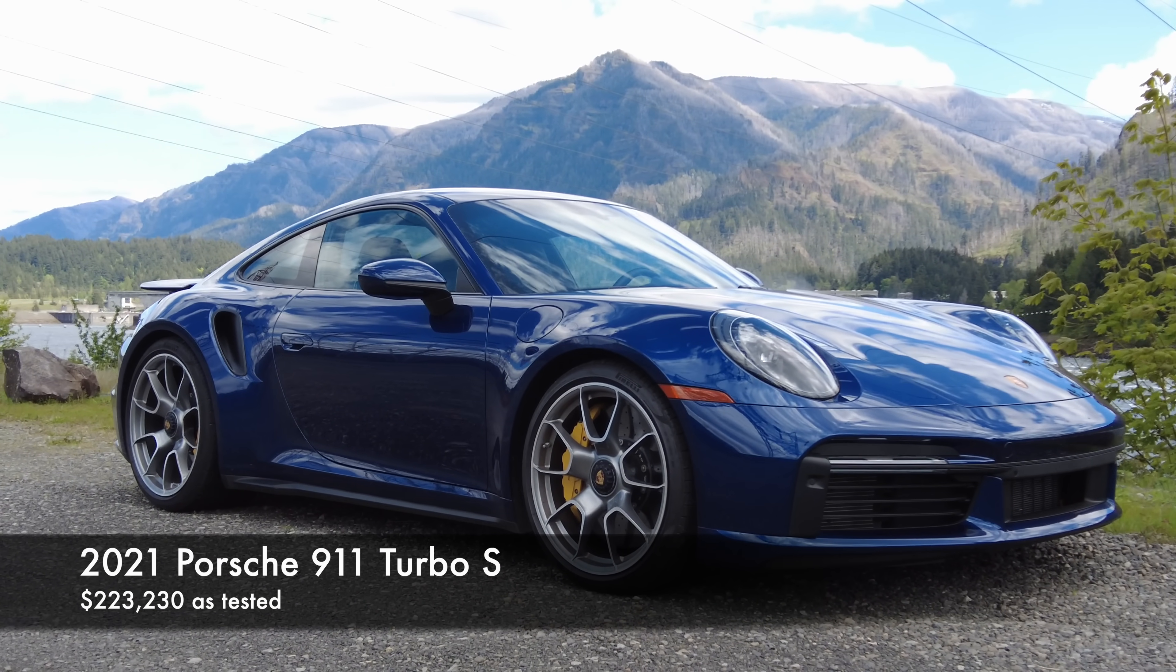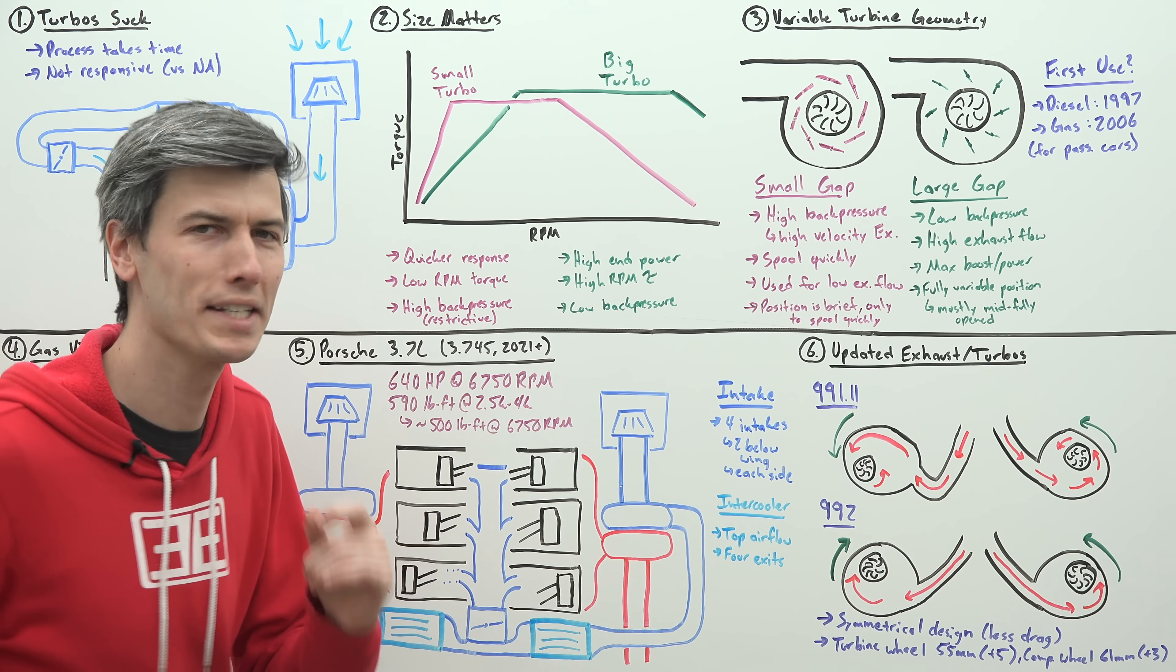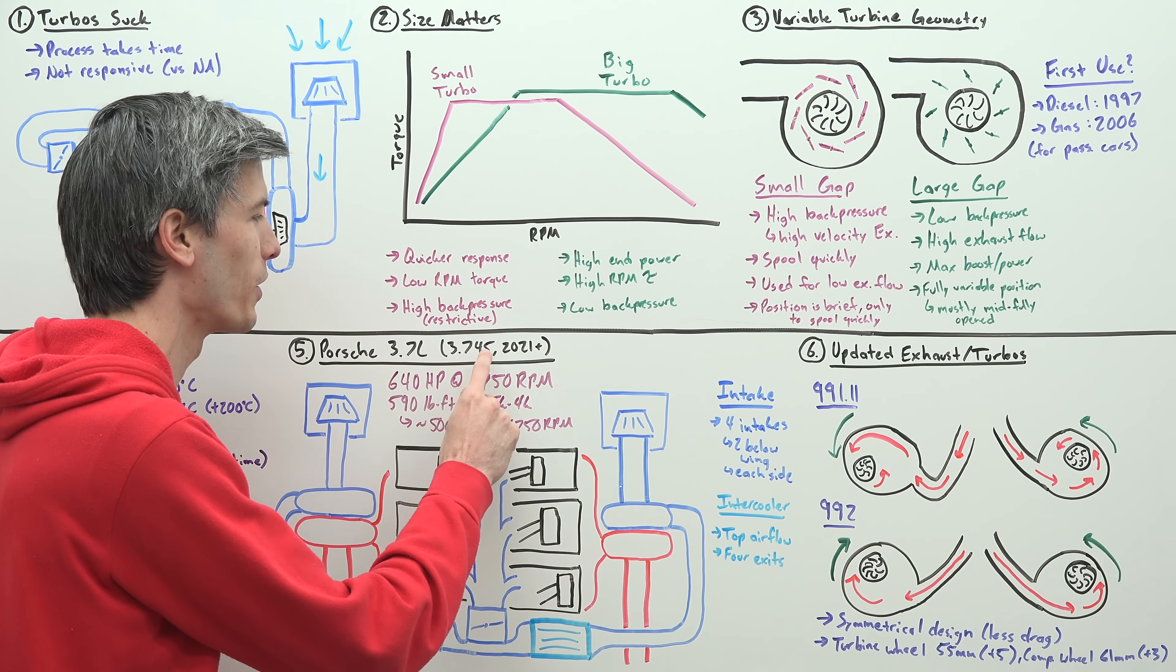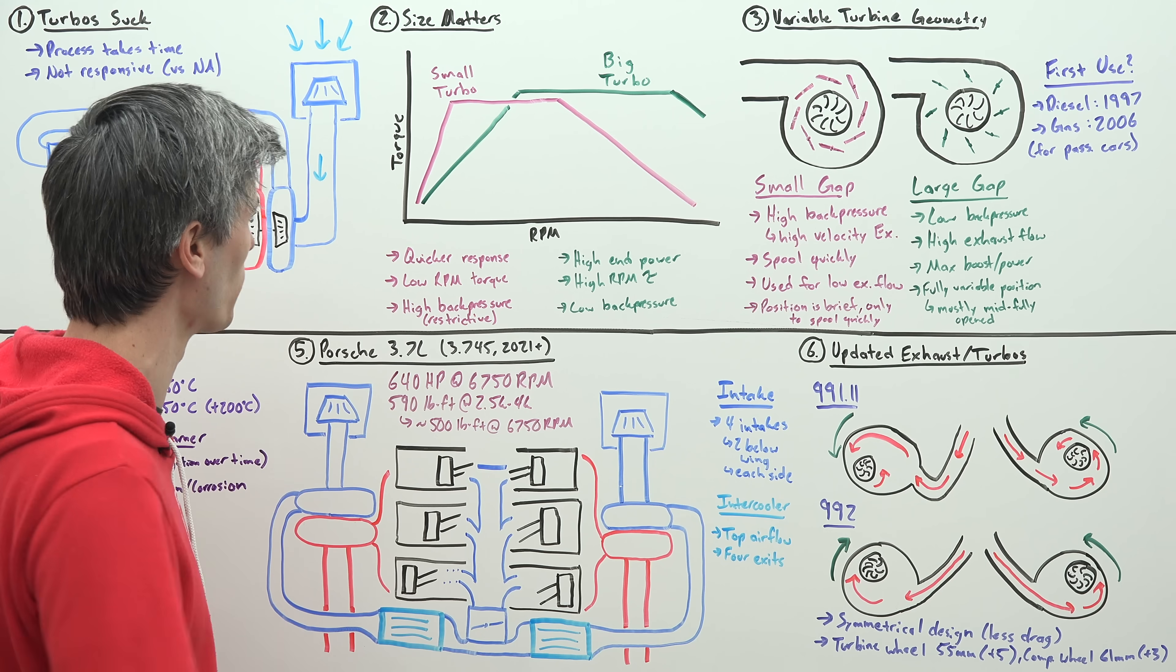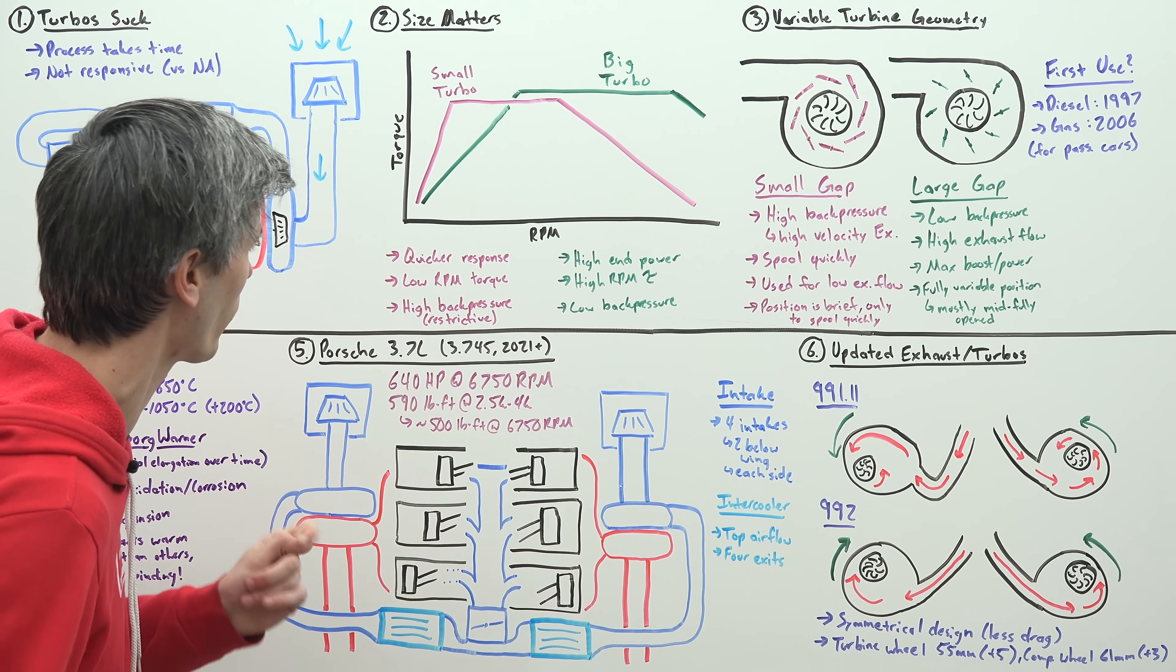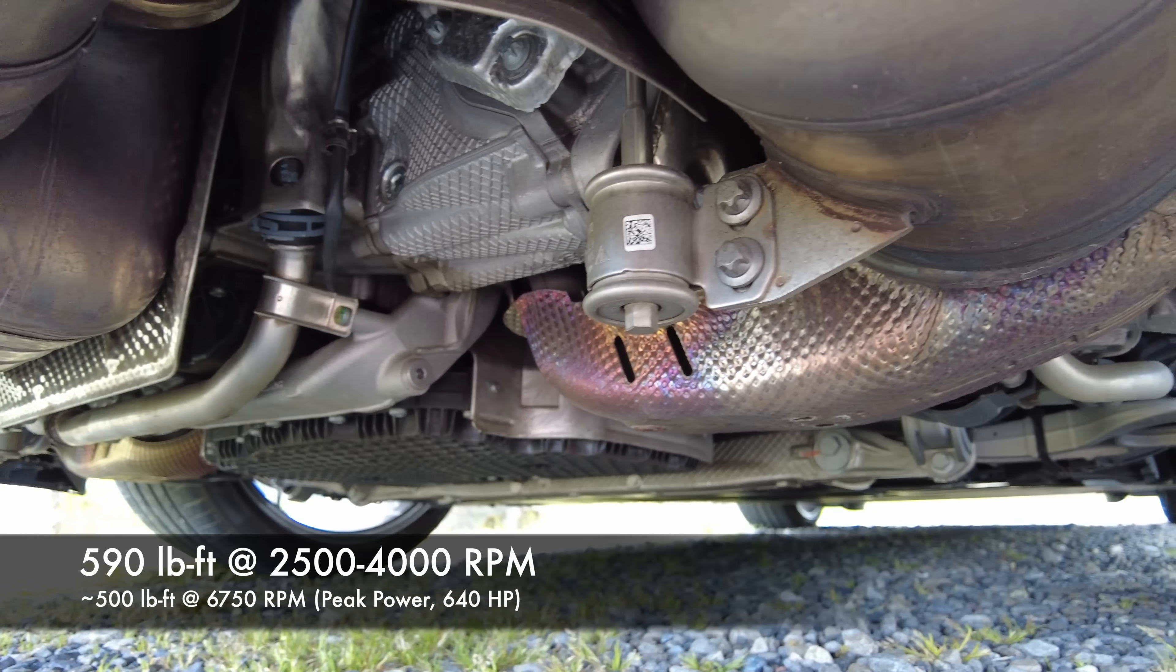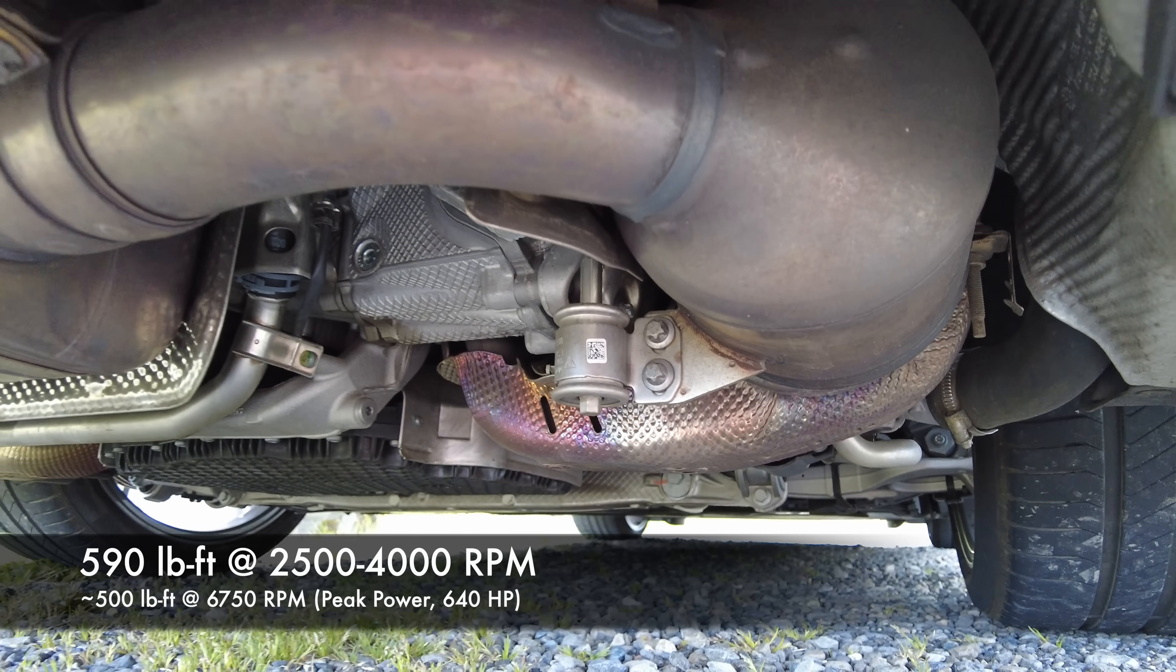In this specific application we have a 3.7 liter six cylinder engine. Some may refer to it as a 3.8, but it is not. It's 3.745 liters, so it's a 3.7 liter engine. 640 horsepower at 6750 RPM, 590 pound-feet at 2500 to 4000 RPM. That range may not seem all that great, but consider at 6750 RPM where it's hitting peak power, it still has nearly 500 pound-feet of torque.